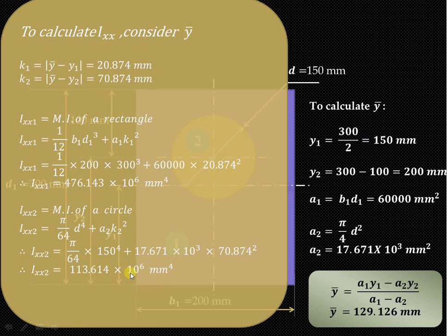The moment of inertia of this cutout section will be equal to Ixx1 minus Ixx2, because from the first section the second section is cut out. That value comes out to be 362.528 × 10⁶ mm⁴. This is how we can calculate the moment of inertia of the cutout section.